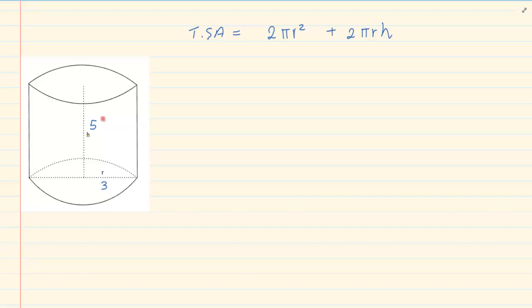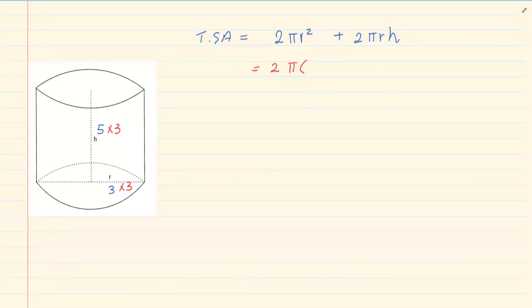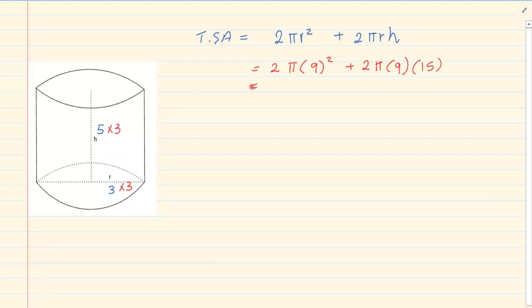Now let us do an adjustment again of 3. So now what do we have? We have 2π. But what is our r? Our r is no more 3. It is now 9. So I have 9 squared plus 2π. Again our r is 9. And what is our height? 15. So we have 162π plus 270π, which is equal to 432π.